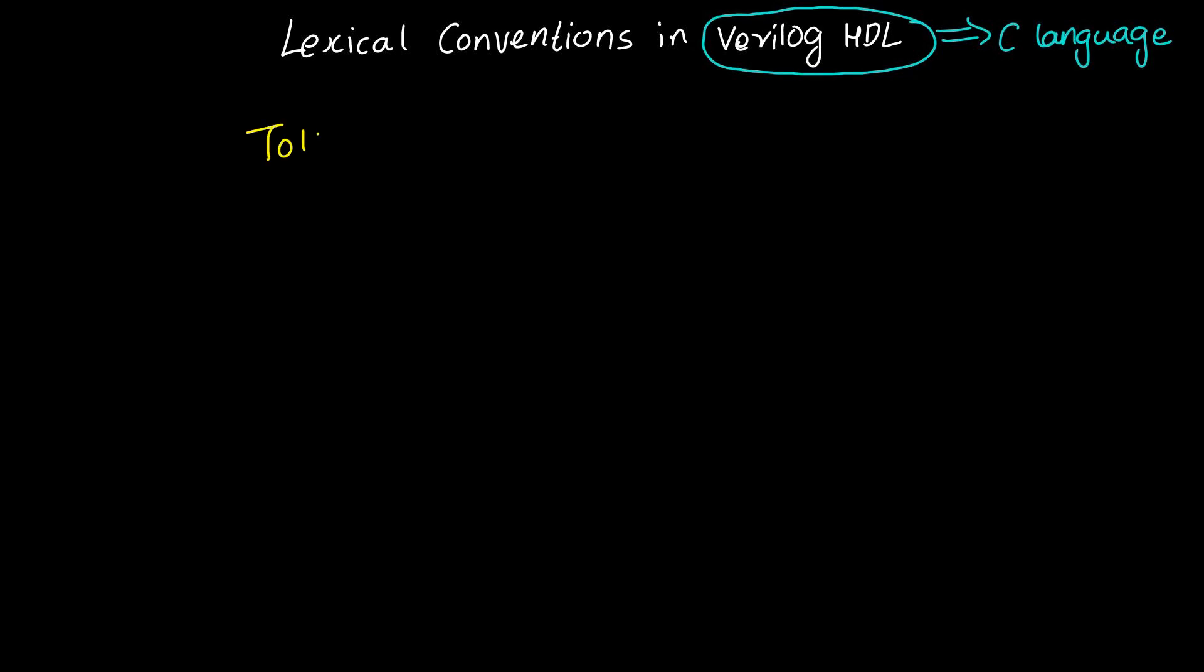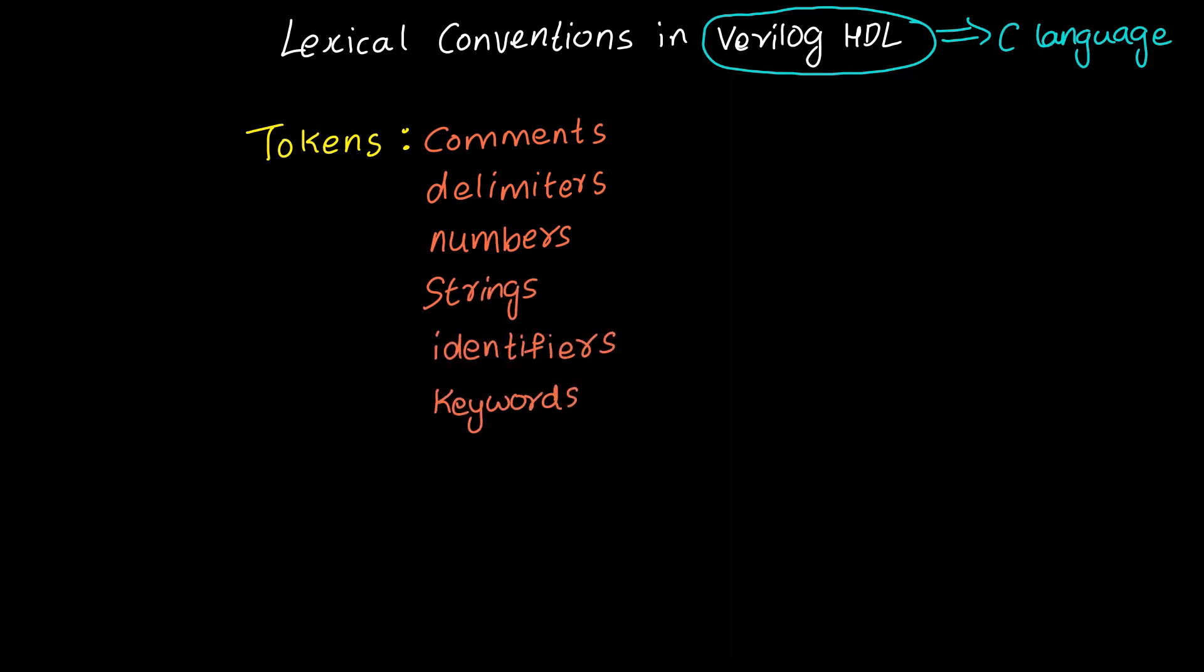Verilog contains a stream of tokens. Tokens can be comments, delimiters, numbers, strings, identifiers, and keywords. Verilog HDL is a case-sensitive language. All keywords are in lowercase.